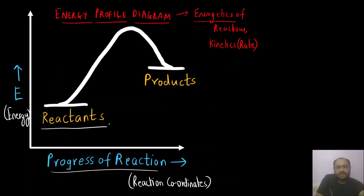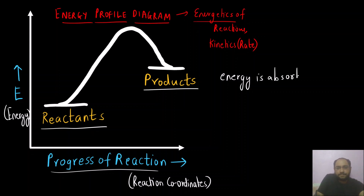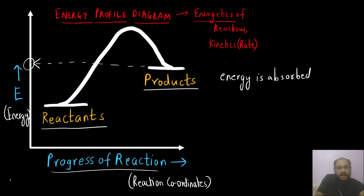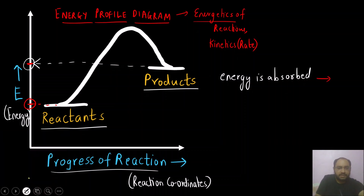Here you can see the energy of the reactant is less and the energy of the product is higher, which means energy is absorbed. The energy of the product is at a higher value as compared to that of the reactant. So this is an endothermic reaction — this is a plot for an endothermic reaction.